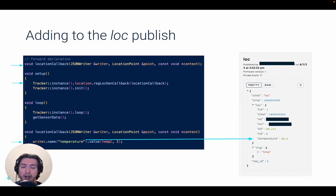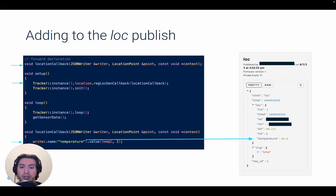Now that you have your development environment ready and a working copy of Tracker Edge, one of the first things you'll want to know is how to send custom data to the cloud. While you could certainly use our particle.publish API, for Tracker products we recommend instead to append your custom data to the existing location publish. This way, you'll get the latest measurements and location data with every publish. To do this, you first register a location generation callback in Setup, then define the new callback function and in the function add the values you need to the location object using the JSONWriter API.